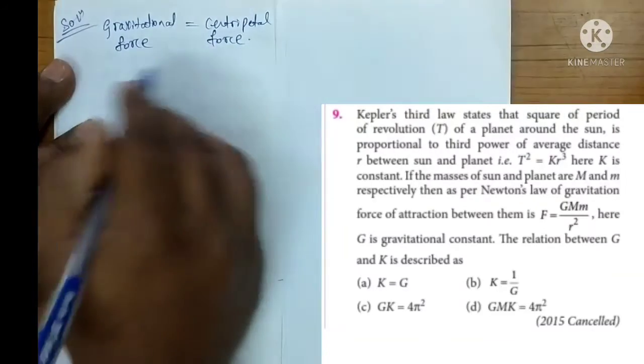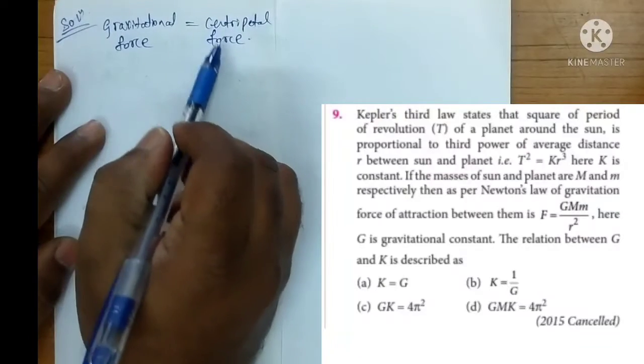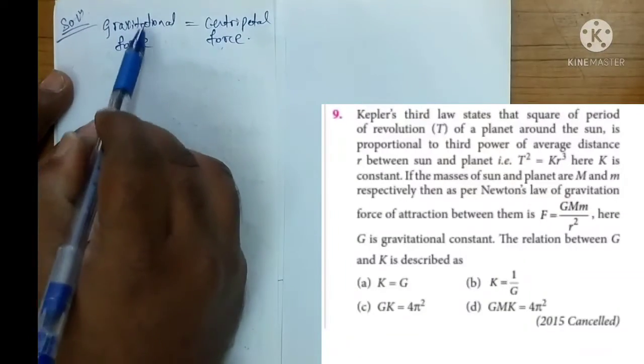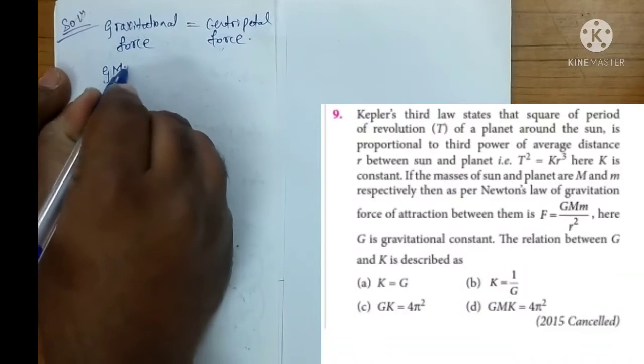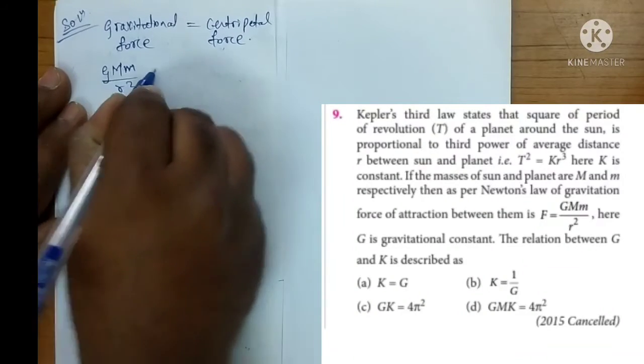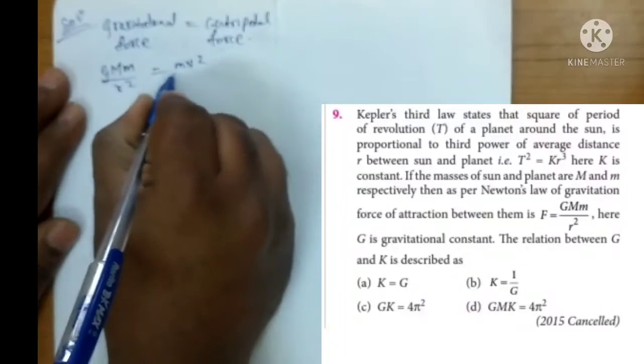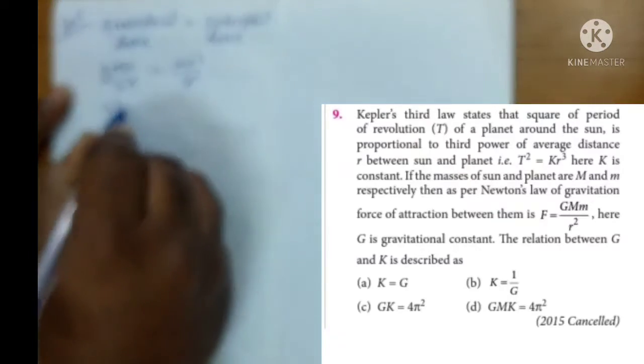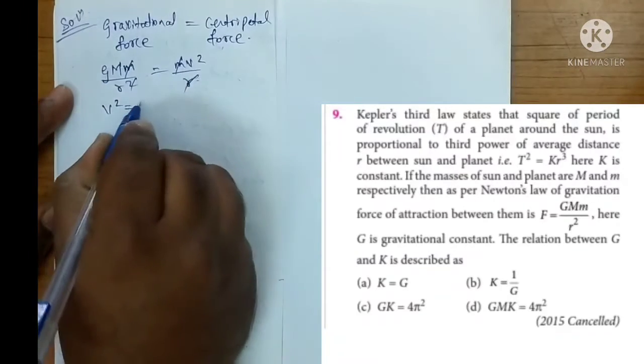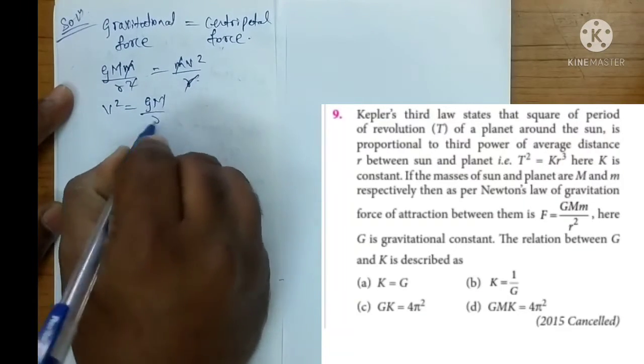Yes, equation is very important. Necessary centripetal force provided by whom? Gravitational force. So we know that gravitational force: GMm/R². Centripetal force: mv²/R. So R cancels, m cancels, v² is equal to GM/R.